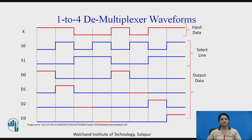Now we will see the waveforms for the demultiplexer. X is the input, and S0 and S1 are the select lines. When both S0 and S1 are low, D0 is selected. When S0 is 1 and S1 is low, D1 is selected. When both are high, D3 is selected. When S0 is low and S1 is high, D2 is selected.